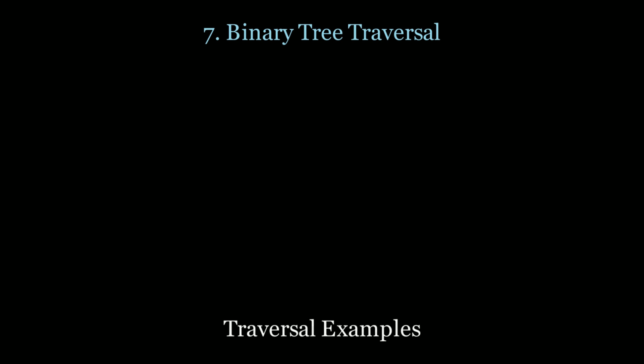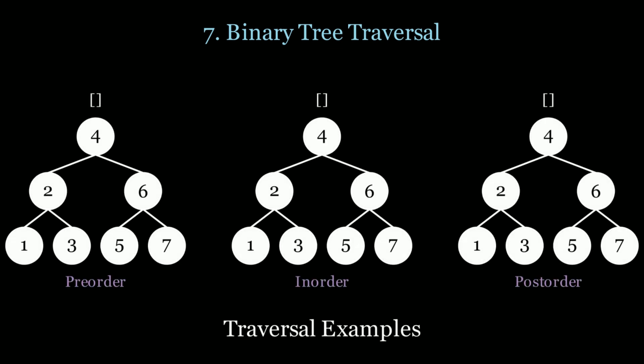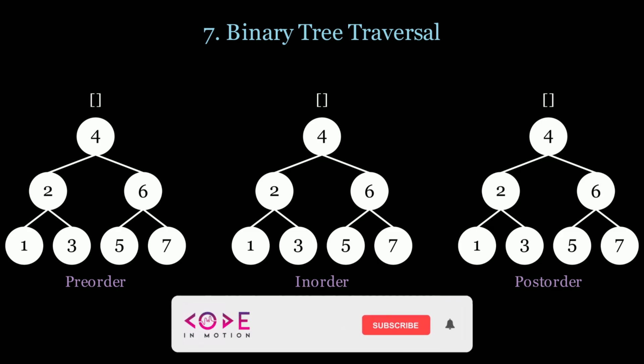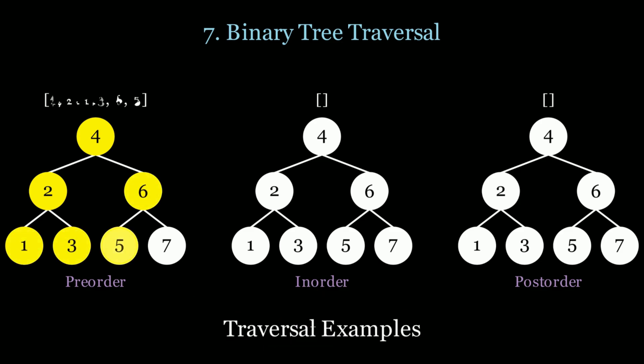Before we get started with this specific problem, I want to give a conceptual overview of the different types of traversal techniques in binary trees. I'm going to go over this snippet from my main video on common LeetCode patterns — number 7, binary tree traversal. Let's add in a couple of trees and start with the pre-order traversal. In the pre-order traversal, you explore the node before you explore their left and right children. So that's going to look like 4, 2, 1, 3, 6, 5, and 7.